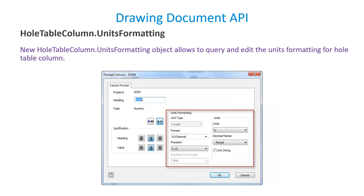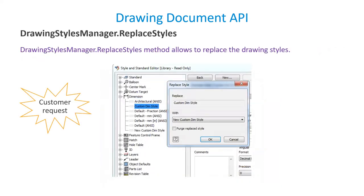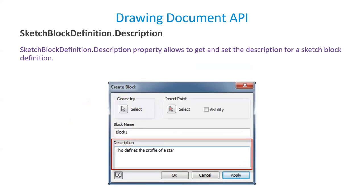The Units Formatting object is exposed to query or edit the units format for all table columns. Based on a customer request, a Replace Styles method is provided which allows replacing the drawing styles within the styles editor. Additionally, a Description property allows getting and setting the description for sketch block definitions.